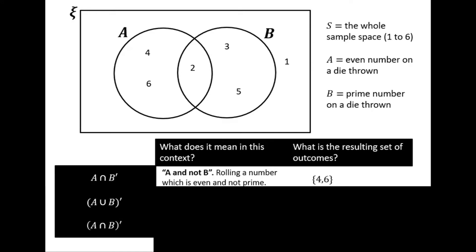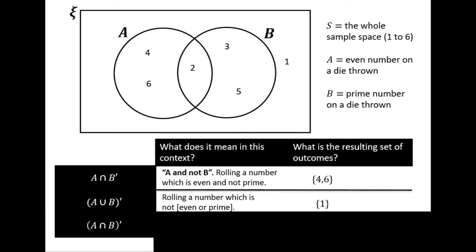And now we're working with brackets. Let's pick up the bracket first. So A union B, we've seen what that looks like. That's anything that is an even number or a prime number, anything inside the circles. Well, I want the complement of that. I want it to be not the union. I want it to be everything that is outside of the circles. And in this case that's the number one.